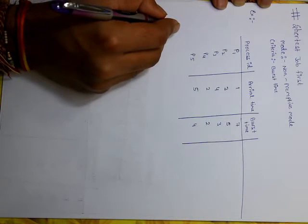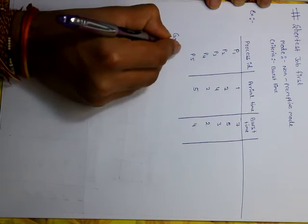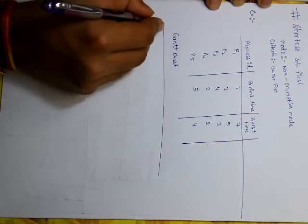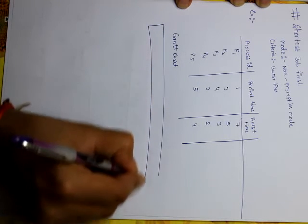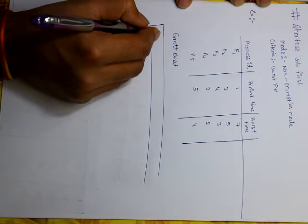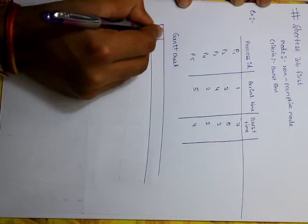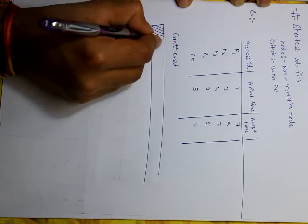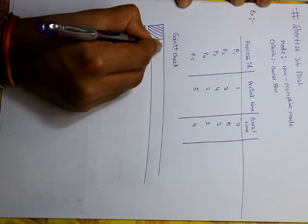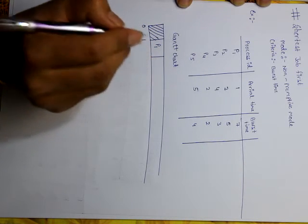Now, schedule the processes in the CPU. To understand it, let's make a Gantt chart. As we can see, the first process P1 is arriving at time 1, so the CPU is idle from 0 to 1. At time 1, process P1 arrives and it has a burst time of 7, so it will complete at time 8.